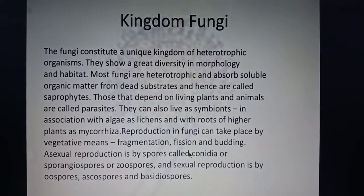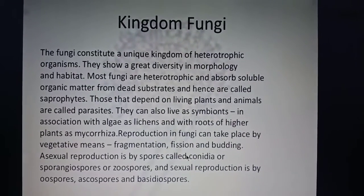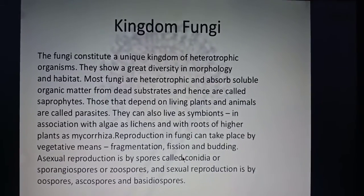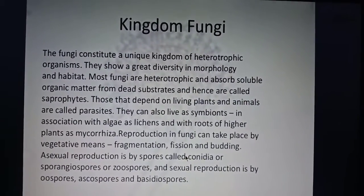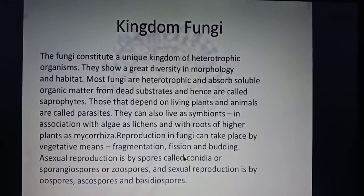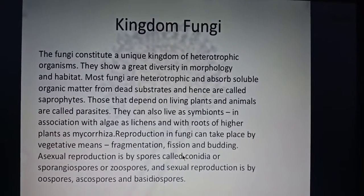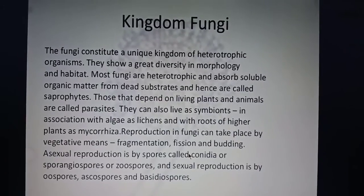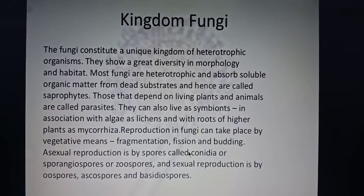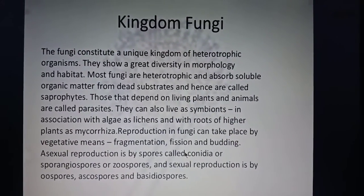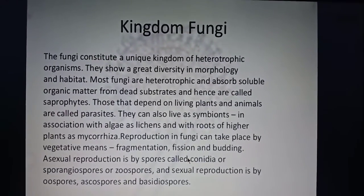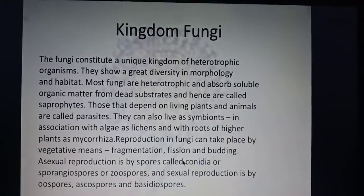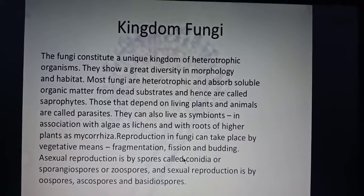In sexual reproduction, fruiting bodies are also formed, and the spores are given different names depending on the type of fungus — they can be oospores, ascospores, or basidiospores. Fungi can reproduce by vegetative, asexual, or sexual means. In asexual reproduction, only one parent is involved; one hypha grows into a fruiting body, produces spores, and liberates them. In sexual reproduction, two hyphae come in contact, exchange nuclei, fuse, form a zygote, and then spores develop.